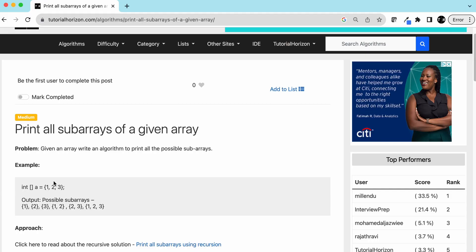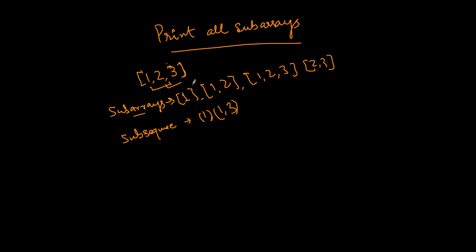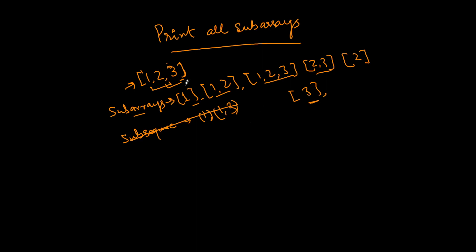Going back to the problem — we have a given array and we have to print all the sub-arrays. For the array [1, 2, 3], the sub-arrays are: [1], [1,2], [1,2,3], [2], [2,3], and [3]. Those are all the sub-arrays.